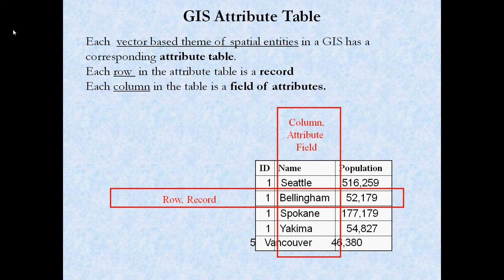The attribute table—this slide is just a review of what an attribute table is. An attribute table is information about each of the features or spatial entities that exist within a dataset or data layer.